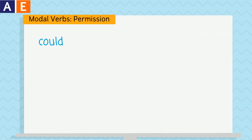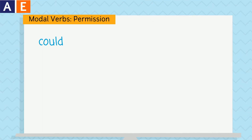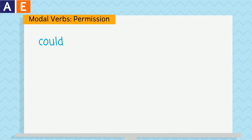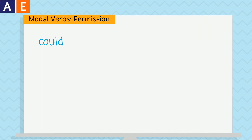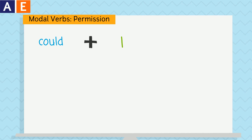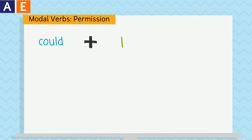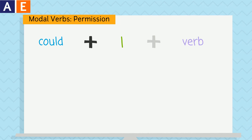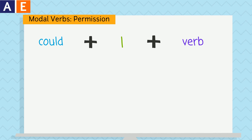We use could to ask for permission. When we ask for permission, could is often followed by I. And like all modal verbs, could is also followed by another verb.